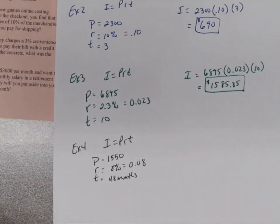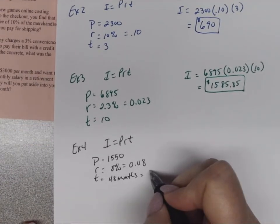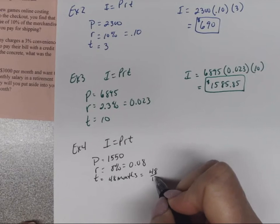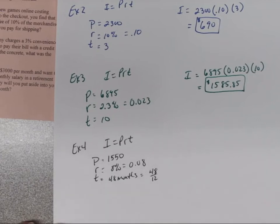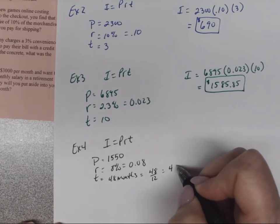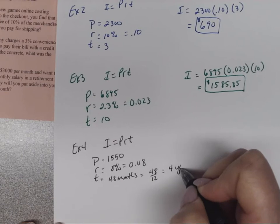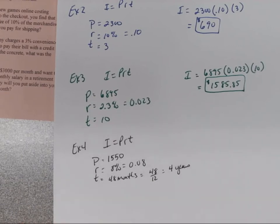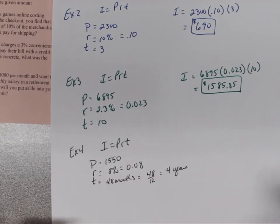Now we need to know what it is in years. How many months are in a year? Well, this will become 48 over 12. We've got to divide by 12 months, which will get you four years. So 48 months is going to become four years. If you don't change it to years, you will not get the right answer.